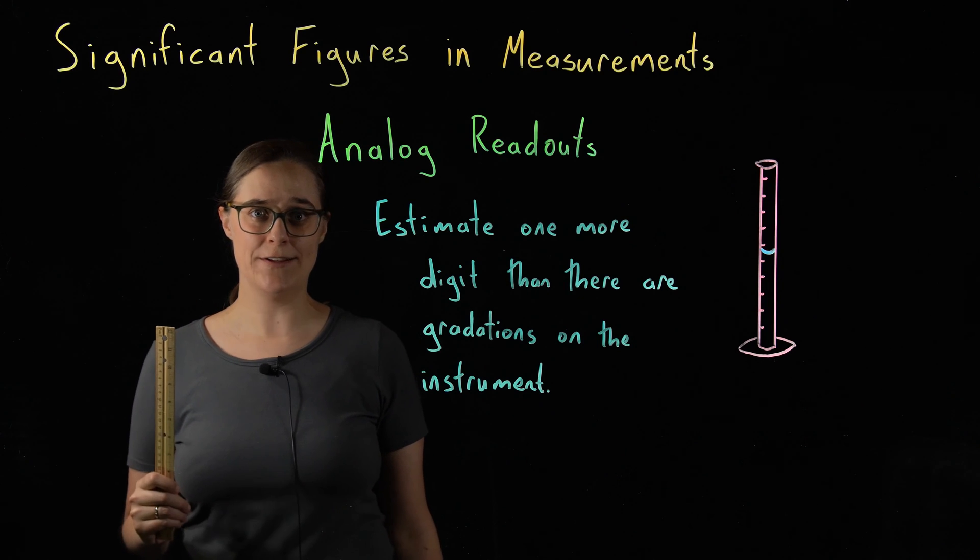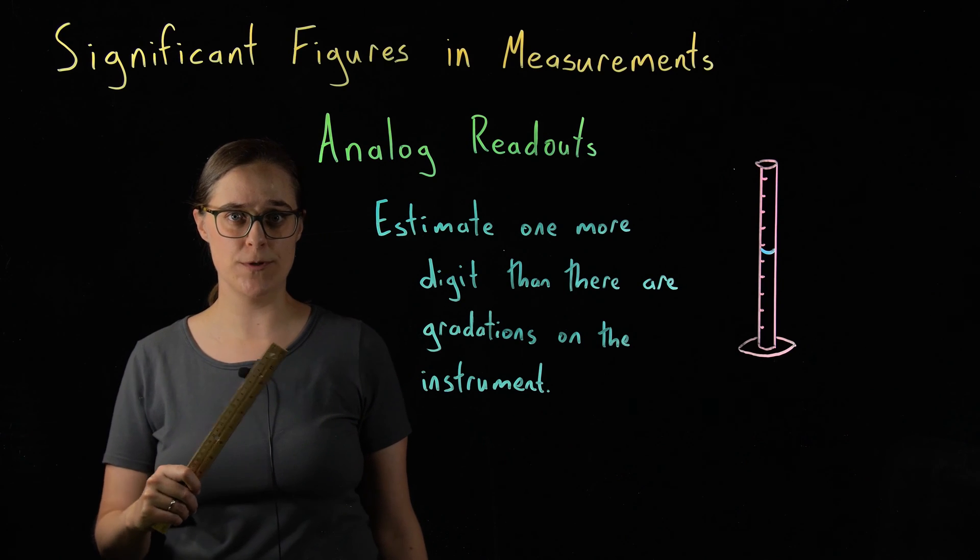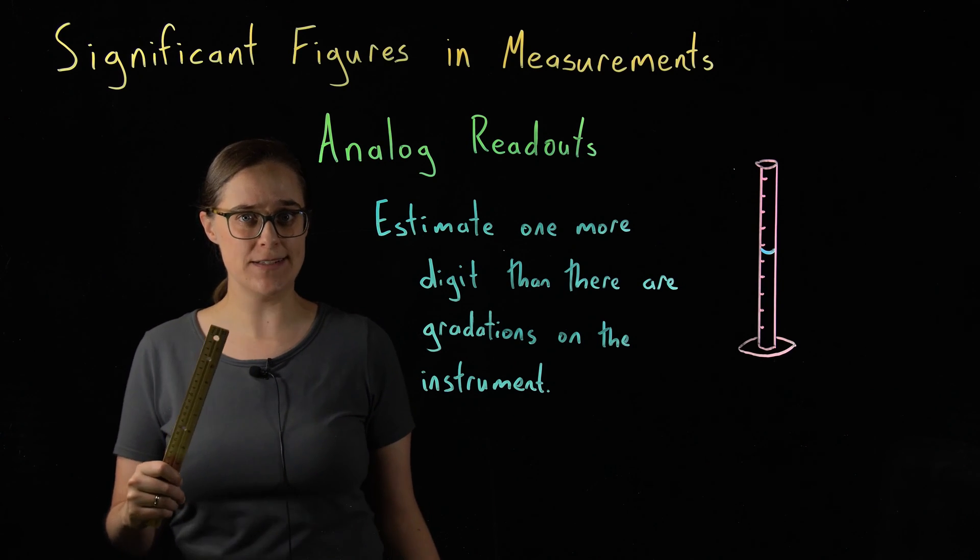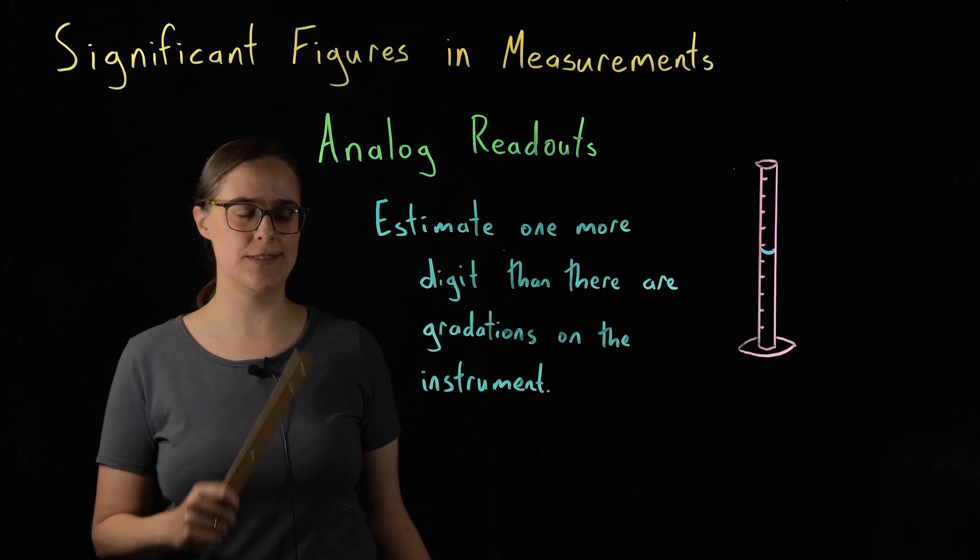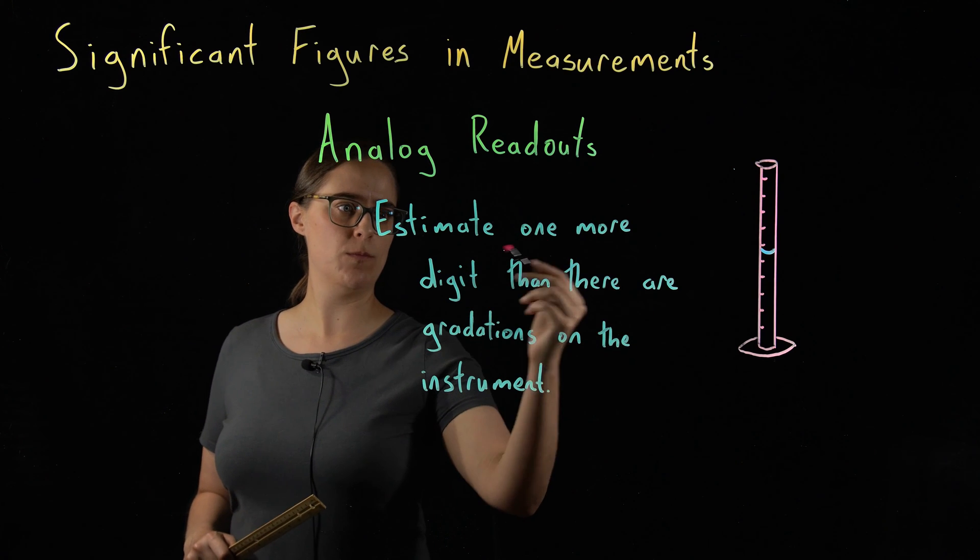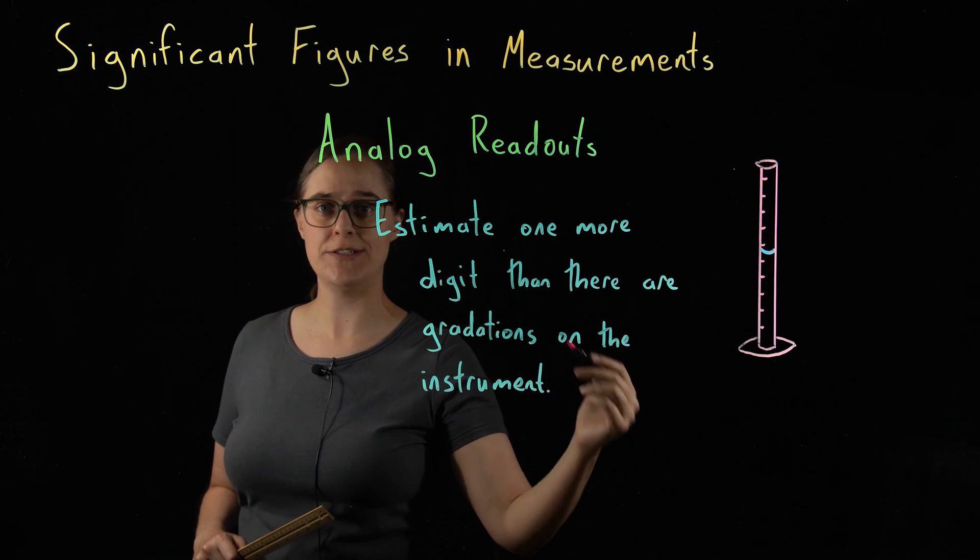If your instrument has an analog readout, meaning something like a ruler or a gauge, just not digital, you have to estimate that one additional significant figure by yourself. So this is our rule. Estimate one more digit than there are gradations on the instrument.